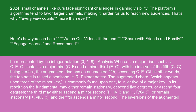Analysis: whereas a major triad such as C, E, G contains a major third C-E and a minor third E-G, with the interval of the fifth C-G being perfect, the augmented triad has an augmented fifth, becoming C, E, G#. In other words, the top note is raised a semitone.